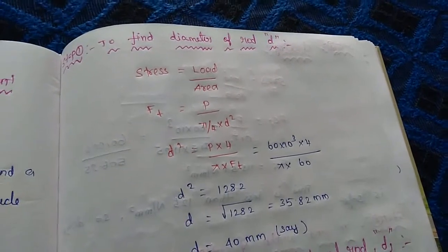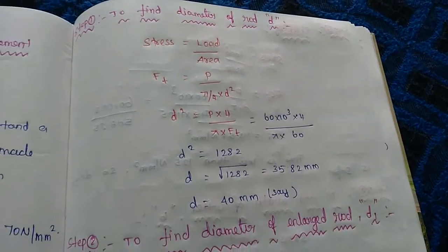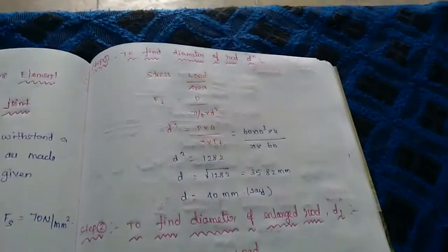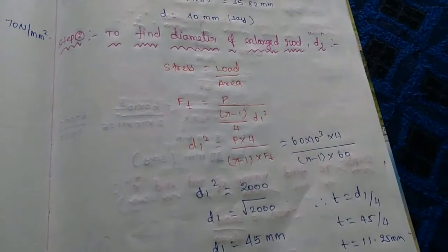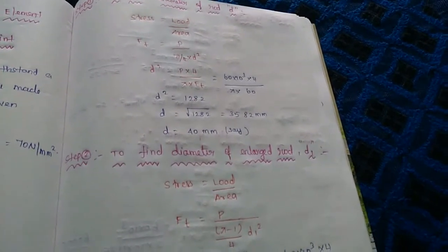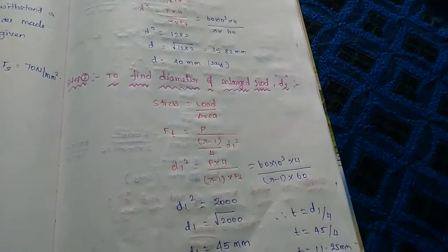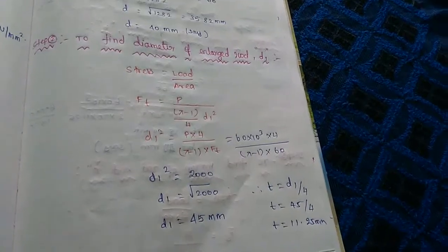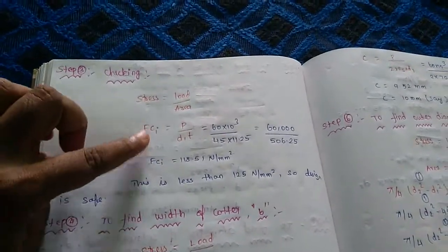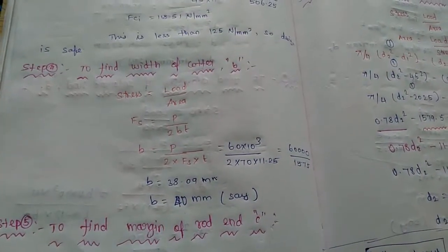First, the diameter is D. Stress = load / area; Ft = P / (π/4 · D²). This gives us the rod diameter D. The second step uses D to find d1. Stress = load / area; checking Fci: Fci = P / (π/4 · (d2² - d1²)). The Fci value from calculation is 118, and given data Fci limit is 130 — so 118 is within the maximum, which is acceptable.